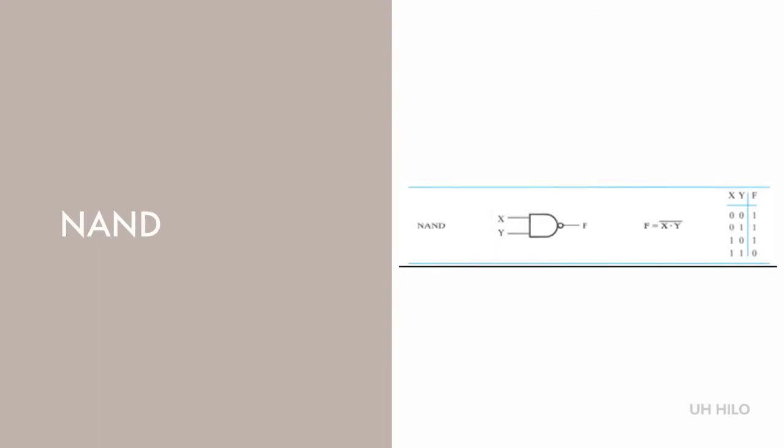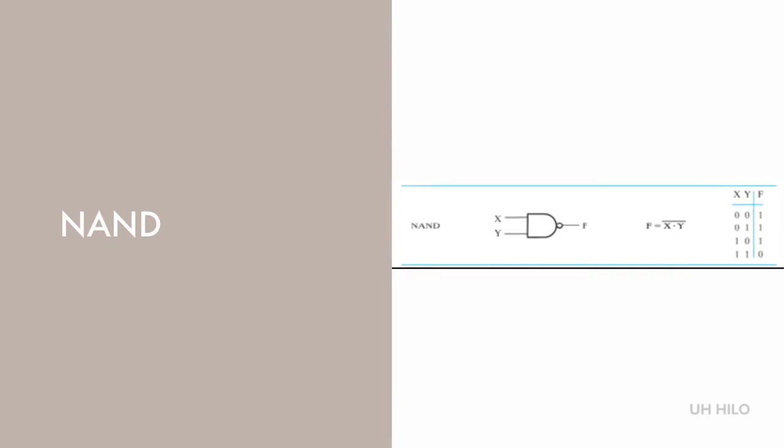This is a NAND gate. It represents the complement of the AND function. It has an output of one in all the cases except where the two inputs are both one. The gate itself looks like AND, with the exception of the small dot leading to the output, which is our negation indicator.